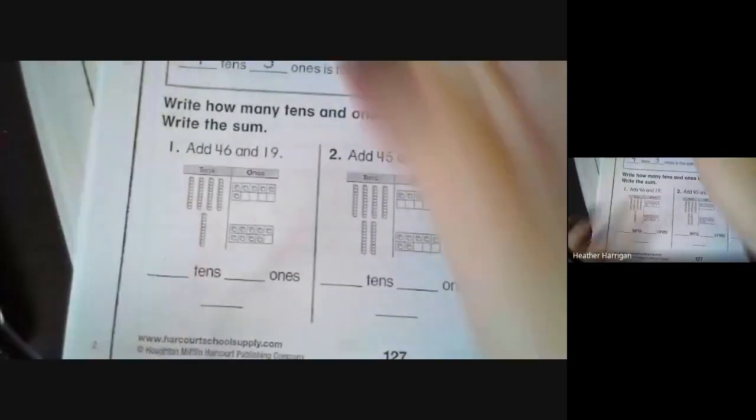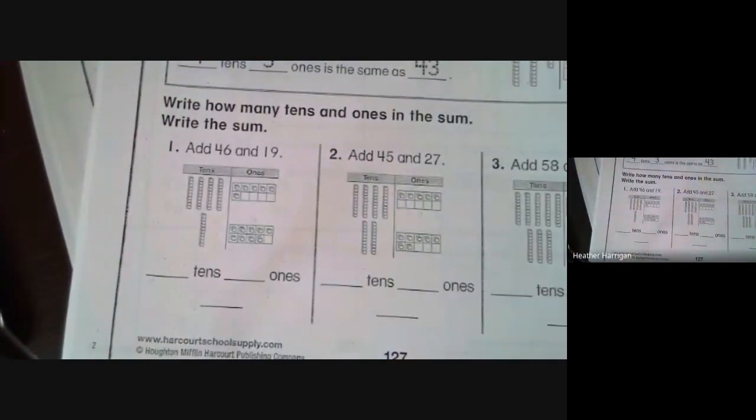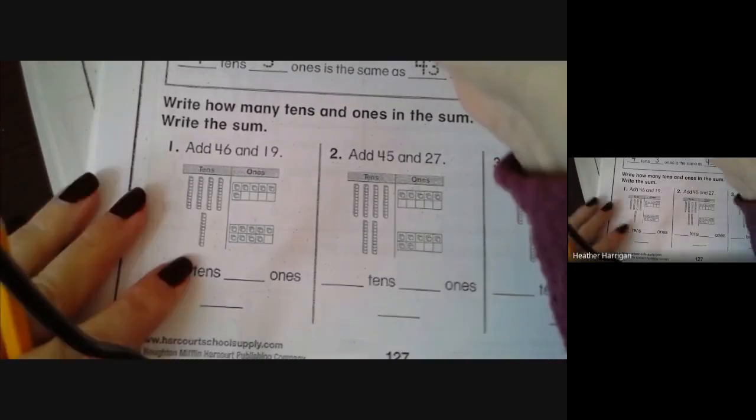The third strategy that we're going to do is drawing a quick picture to add sums. This gives the children a sense of place value, and it will heighten their number sense, breaking apart numbers into tens and ones.